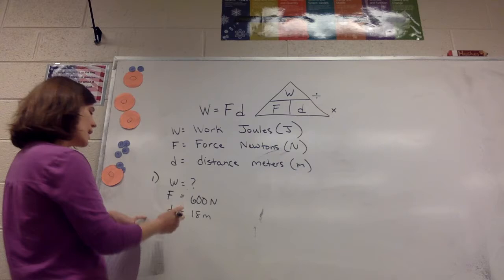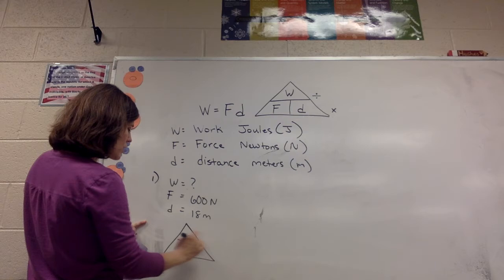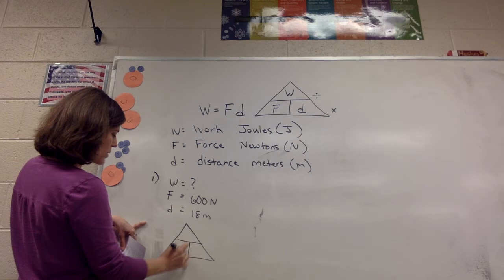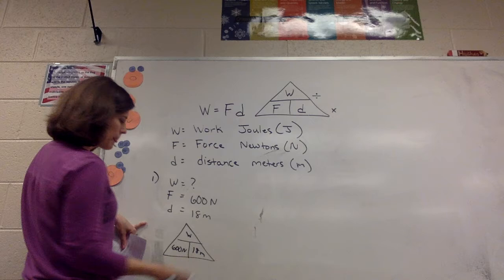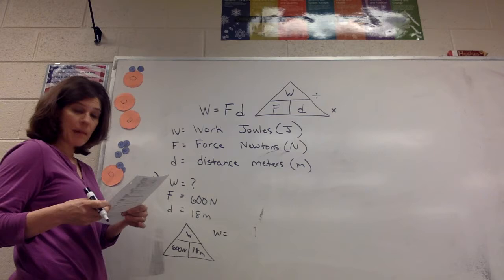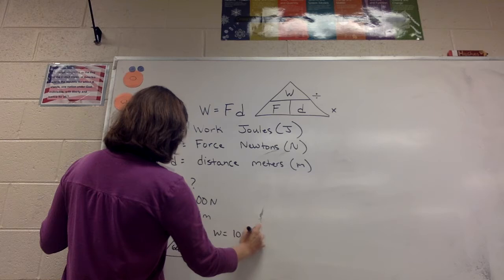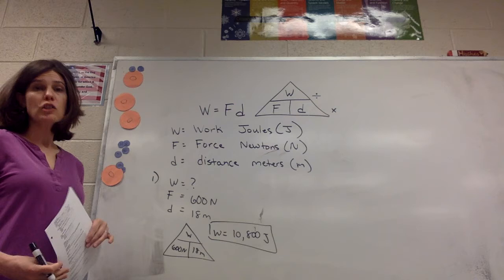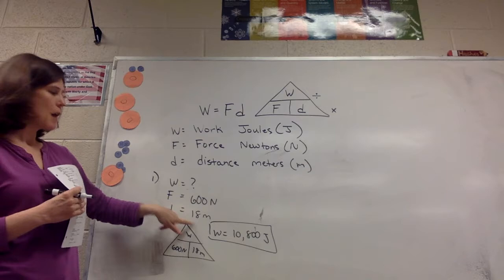So if we want to calculate how much work the person did to climb two flights of steps we're going to substitute in. You can either do the triangle or just substitute in the equation. I'm going to show the triangle method so the force in this case is that weight of the person, 600 newtons. The distance moved is 18 meters and so when the numbers are side by side that means to multiply. So we're going to take 600 newtons and multiply by 18 and you should get an answer of 10,800 joules. And remember that is how much work the person performed to move themselves, their weight, 18 meters.